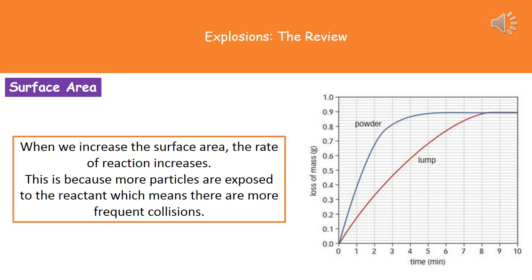One question they like to ask in your exam is to give you one of those lines already sketched on a graph and ask you to sketch the line for the powder. What they're looking for is a steeper line than the lump, and the second mark comes from making sure both lines finish at the same number on the right hand side. You won't get more product produced because you've started with the same amount of reactant, so be careful not to have your line finishing above the other one.